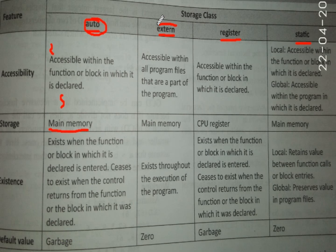Next is external. An external variable is accessible within all program files that are part of the program. Suppose we have three programs in a project — we declare our variable as external so that we can access it within all the interrelated programs. Its storage is in main memory, it exists throughout the execution of the program, and its default initial value is 0.